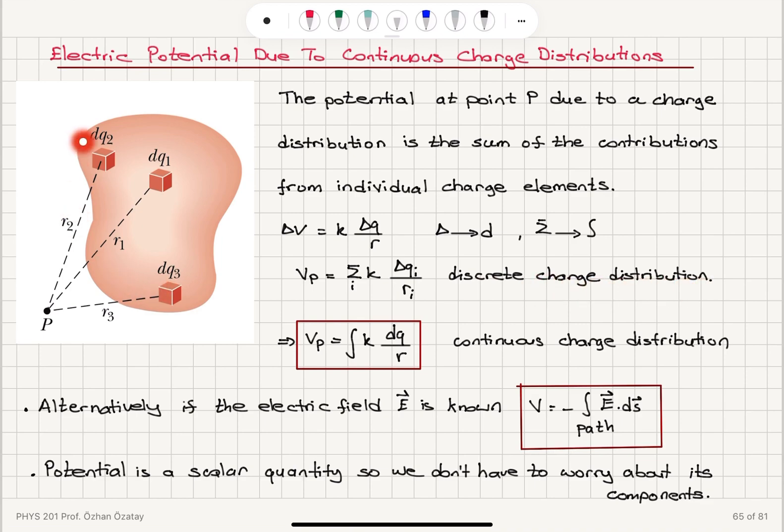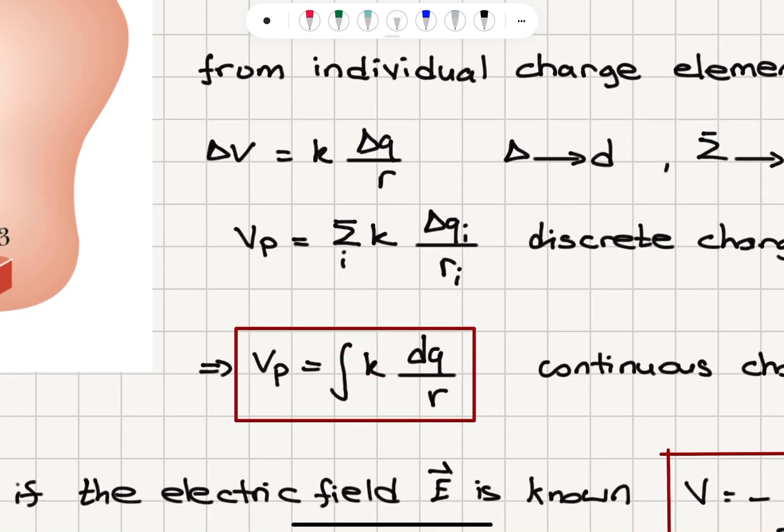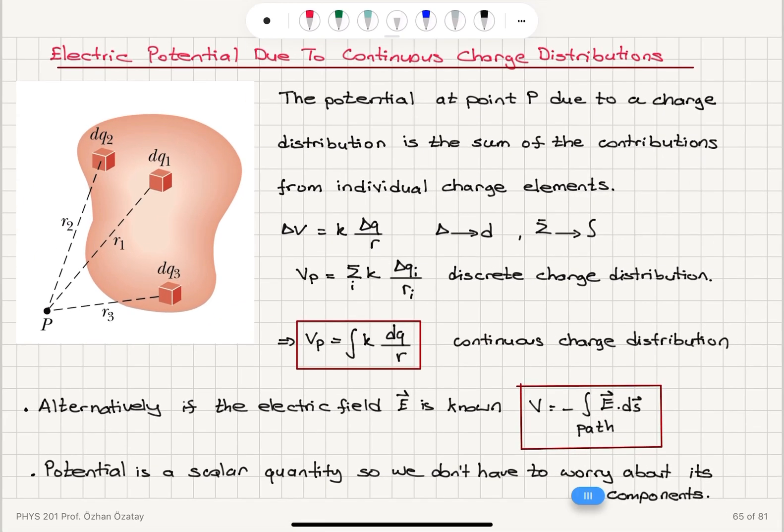If this is a continuous charge distribution, this summation is replaced by integration and delta q becomes dq. So we have integral kdq over r for the continuous charge distribution.